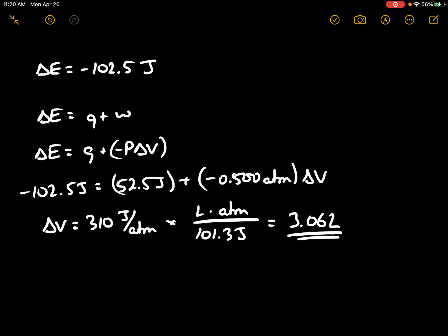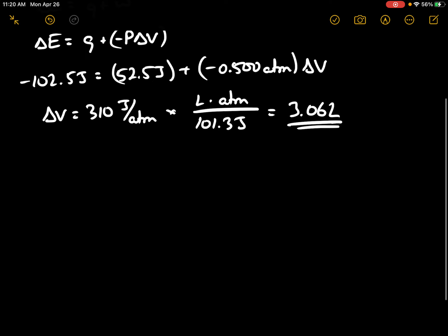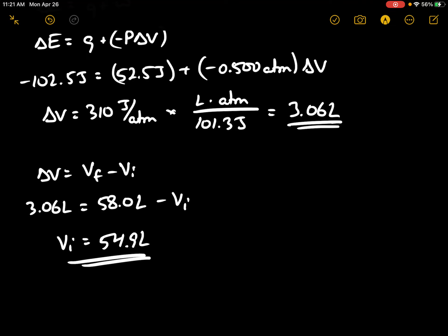We're told that the final volume is 58. So delta V is equal to VF minus VI. This is 3.06 liters, and this is 58.0 liters minus VI. Solving this, the initial volume of the system works out to 54.9 liters.